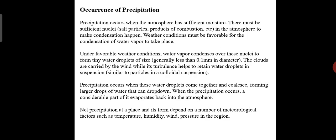Occurrence of precipitation. Precipitation occurs when the atmosphere has sufficient moisture. There must be sufficient nuclei, such as salt particles, products of combustion, etc., in the atmosphere to make condensation happen. Weather conditions must be favorable for the condensation of water vapor to take place.